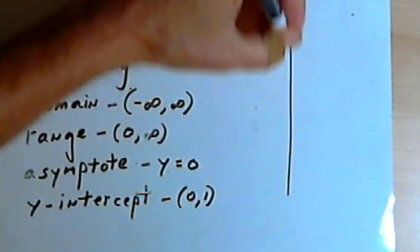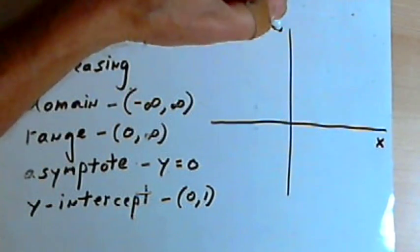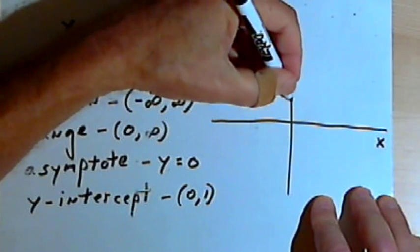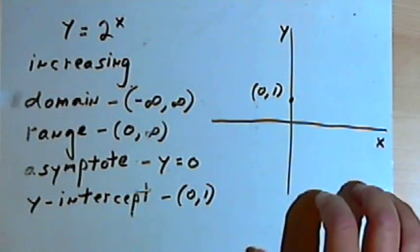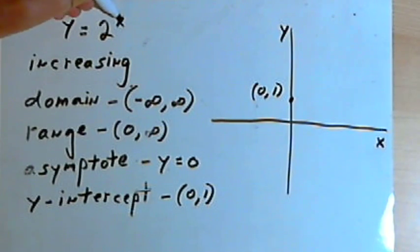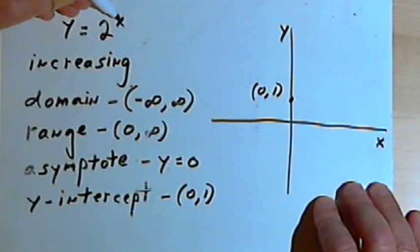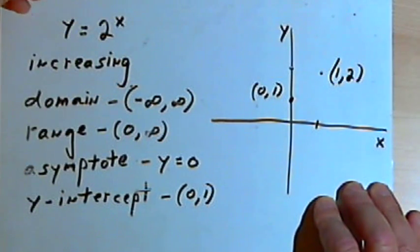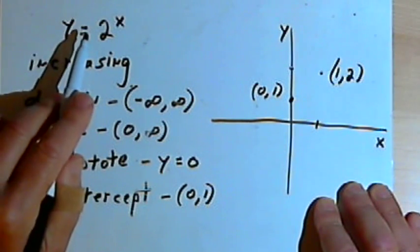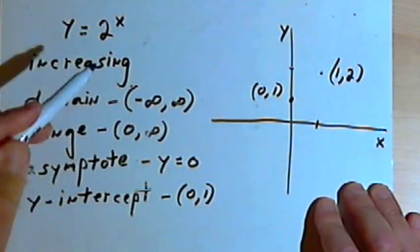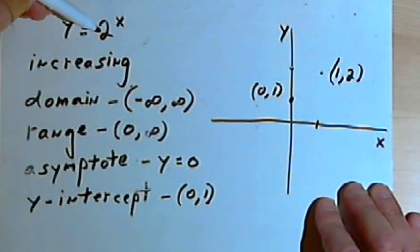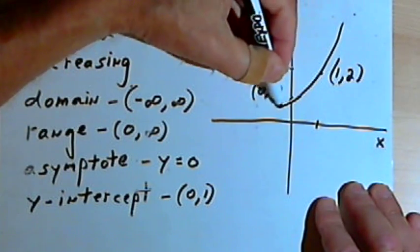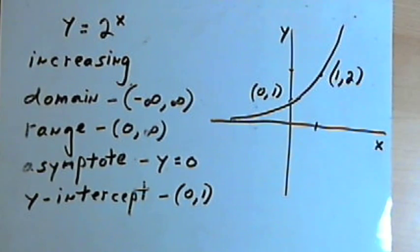Let's take that information and see what we can do as far as sketching a rough graph. I know this is going to increase, I know I'm going to have an asymptote along the x-axis, and I'm going to have a point at (0, 1). If I had one more point, it would be easy to sketch the graph in. When x equals 1, y is going to equal 2, since 2 to the first power is just 2. So we have another point at (1, 2). In general, for these basic exponential functions you'll have a point at (1, base). With the horizontal asymptote known, I can just roughly draw a curve for y equals 2 to the x.